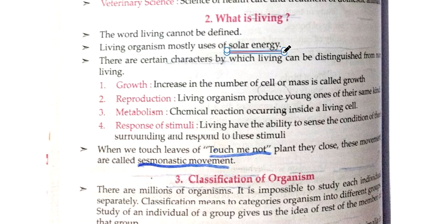Living organisms mostly use solar energy. We know very well that we receive energy from our Sun, where there is a process known as photosynthesis. After photosynthesis, most plants convert light energy into food energy, from where living organisms get their energy. There are certain characteristics which separate living beings from non-living beings as per biology.